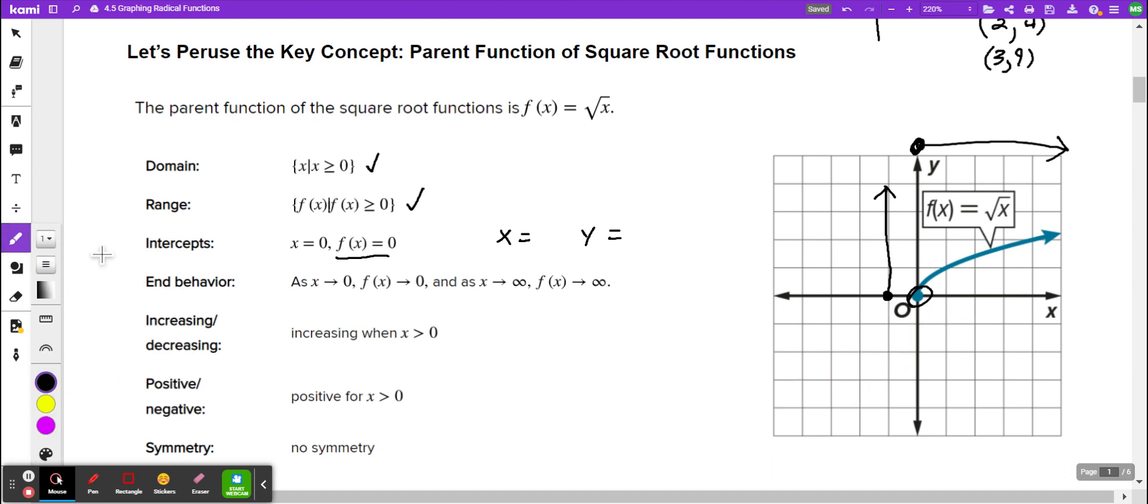Is it increasing or decreasing? As we go this way, is it going up or down? It's increasing. Now positive or negative? It's going to be positive for x greater than 0. And we look at it and there isn't any symmetry on this.